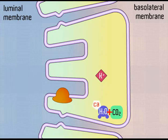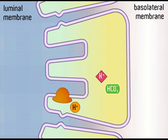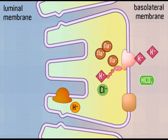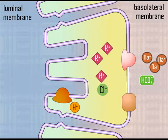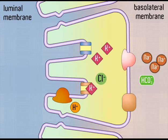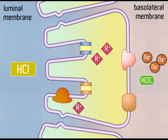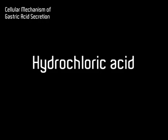Hydrogen ions accumulate in the cytoplasm through the dissociation of carbonic acid. At the basolateral membrane, chloride ions enter the cell via the chloride-bicarbonate countertransporter, while the sodium-potassium ATPase pump provides cytosolic potassium. Through leaky channels at the apical membrane, potassium moves out into the lumen but is transported back intracellularly by the hydrogen-potassium ATPase pump in exchange for hydrogen. The majority of the final secretion entering the lumen contains hydrochloric acid.